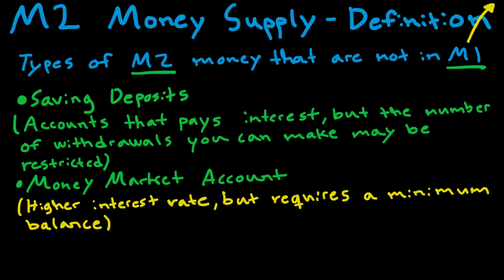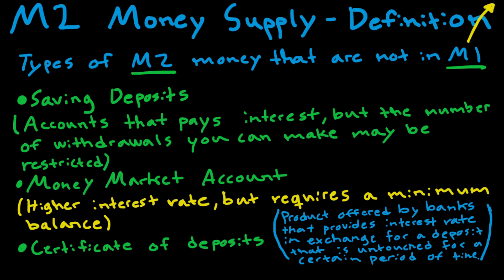One more type of M2 money that are not in M1 is certificate of deposits. A certificate of deposits is basically a product offered by banks that provides interest rate in exchange for a customer to leave a certain deposit that is untouched for a certain period of time. This makes the certificate of deposit not as liquid as, for example, cash.